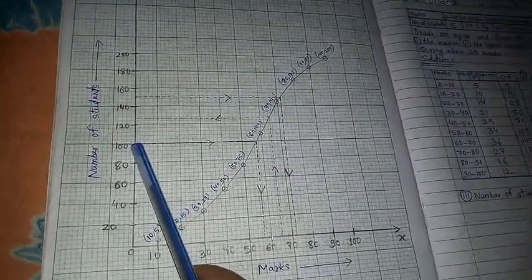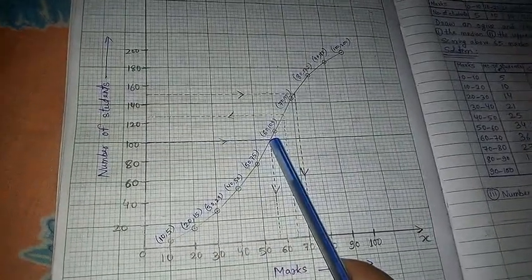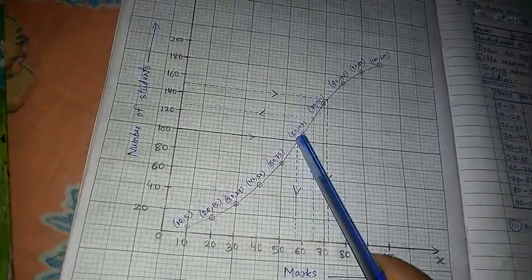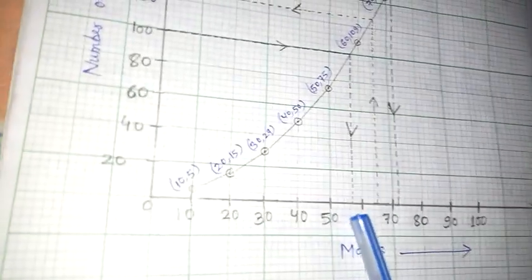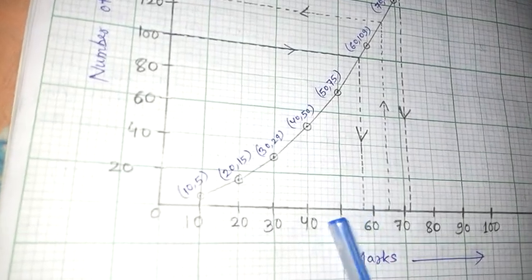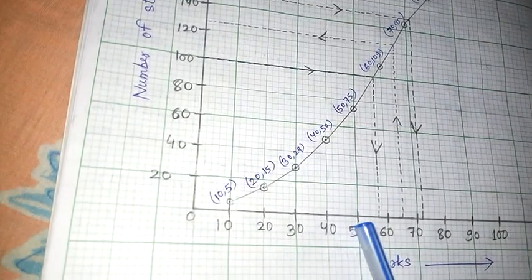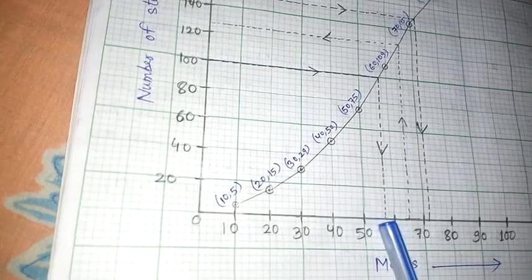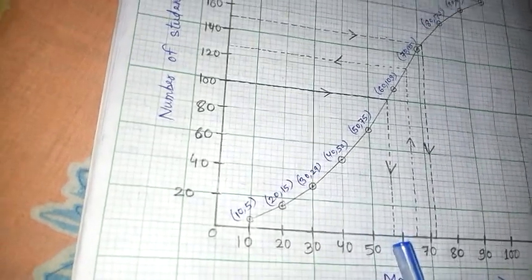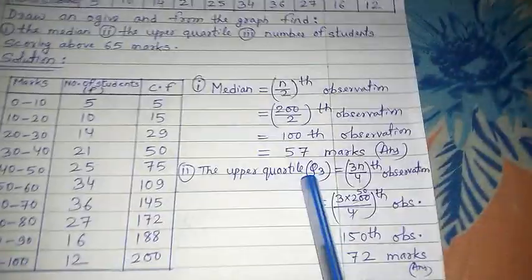Our 100th observation will be like this: go to 100, from 100 you draw a line, the arrow is coming this side. Once you reach here, then you draw from here. Where did it fall? The 100th line has fallen here. This is 50, this is 60. Every line has got a value of 2 here. This is 50, that means 52, 54, 56, 58. It is between 56 and 58. That means it is 57. My answer will be 57.